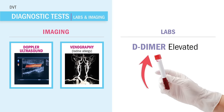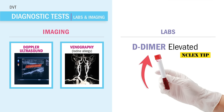Now as far as labs, there's going to be elevated D-dimer — that's a big NCLEX tip indicating a DVT. D-dimer measures that there's actual clot breakdown in the body, which is happening all the time. But elevated D-dimer shows elevated clot breakdown, showing we have a big clot problem.